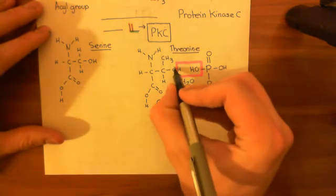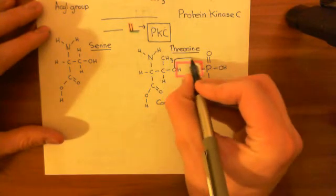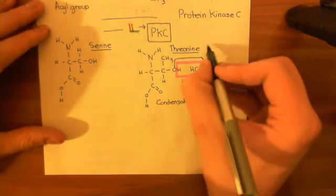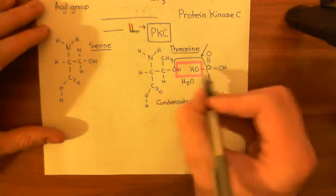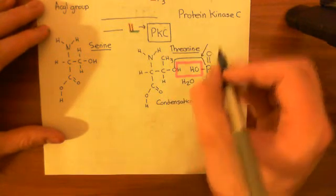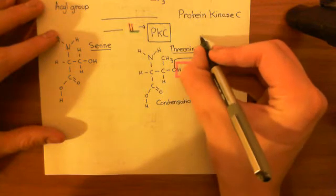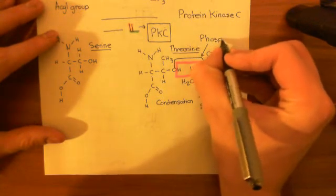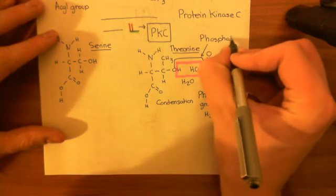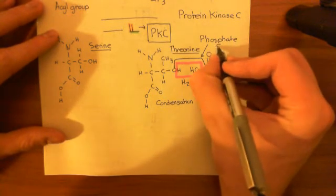Okay. And then what you'll do is you'll link this oxygen atom to the phosphorus atom, and this sort of a link between an alcohol group and a phosphate group is what's known as a phosphate ester link, or a phosphoester is being popularized. Phosphate ester link.